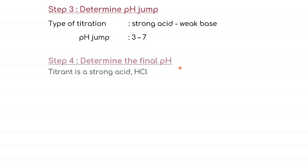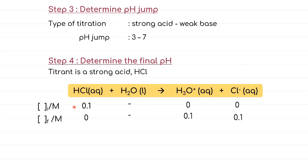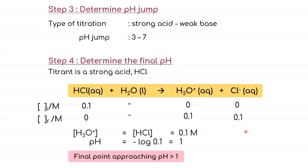For the final pH, since we're dealing with the strong acid HCl, the dissociation of the titrant will involve complete dissociation. Using the IF table to show the dissociation and substituting [H⁺] into the pH formula, the final pH approaches 1.